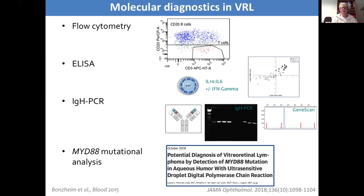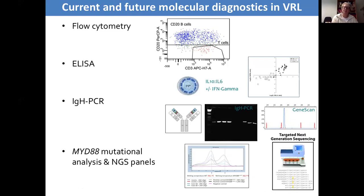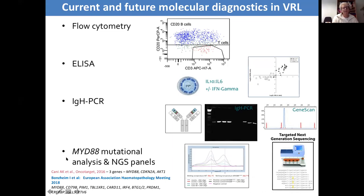These are tiny samples, less than one milliliter in volume. With more and more knowledge about these tumours, people have also designed bespoke next-generation sequencing panels which have included MYD88 and other genes. This has been taken forward particularly by a group in Tübingen, and they recently presented how they've designed a next-generation sequencing panel looking at all these different genes. In this way, you can perhaps more precisely diagnose vitreoretinal lymphoma.